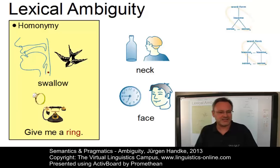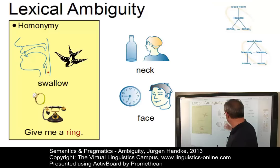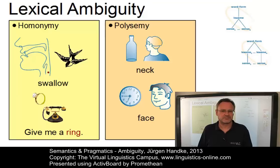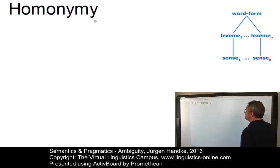A different case occurs when lexical items have acquired different but related senses. For example, 'the neck of a bottle' and 'the human neck,' or 'the face of a clock' and 'the human face.' Such cases are referred to as polysemy. Let's discuss them in detail.